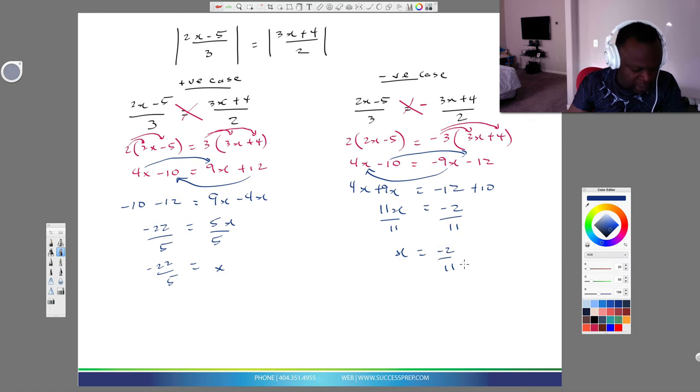Actually, you know what, I added this wrong. 9 plus 4, 4x plus 9 is 13. I made that mistake so I'm going to take that out. So this is going to be 13, and then this is 13. So this is 13x over here, not 11, but the rest of the math still holds. So this is 13x and then divide 13 on both sides, and that is it.